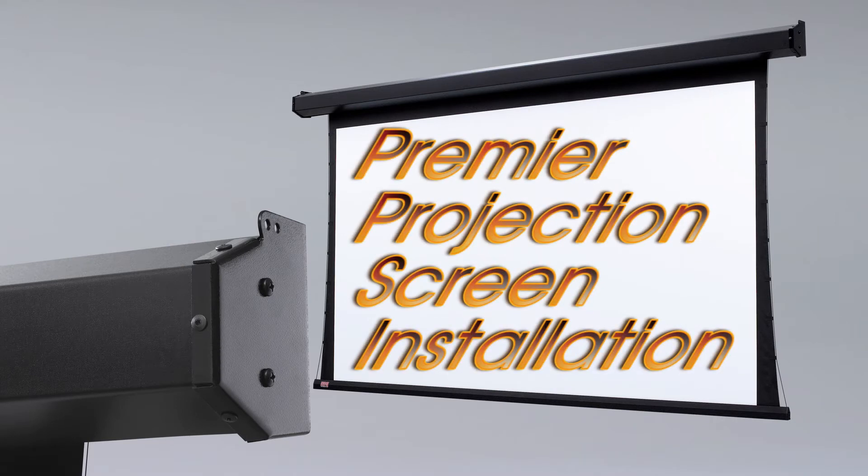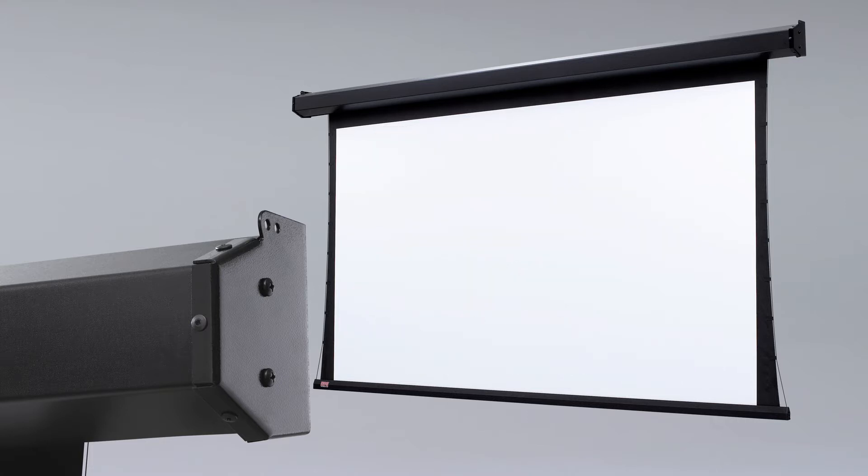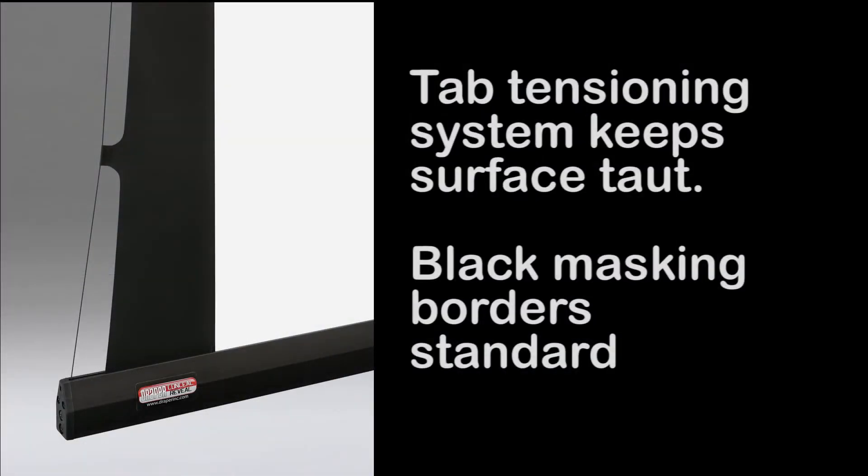The Premier electric wall or ceiling projection screen with Draper's tab tensioning system holds the surface taut and wrinkle free. The Premier delivers exceptional image clarity for video and data projection. Projected image is framed by standard black masking borders at sides.